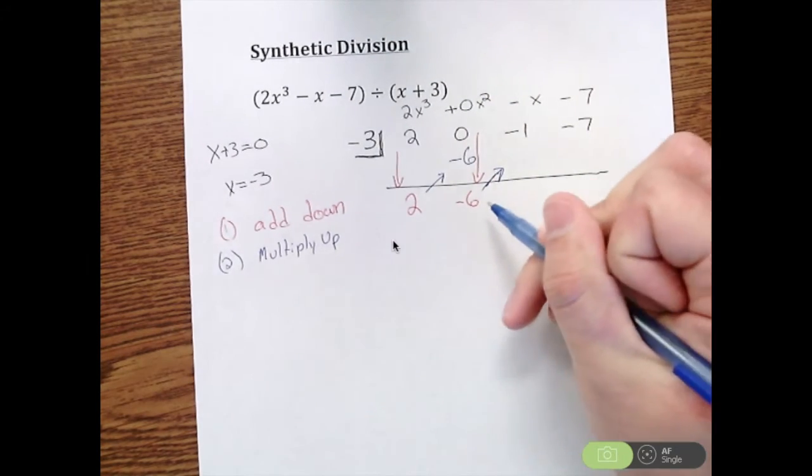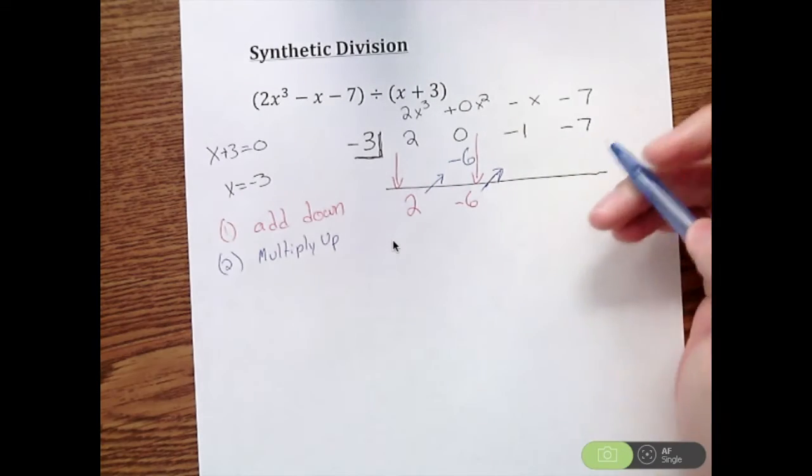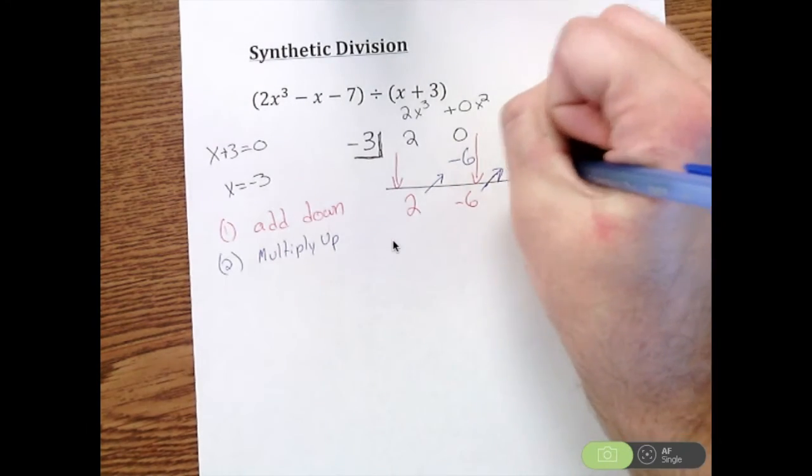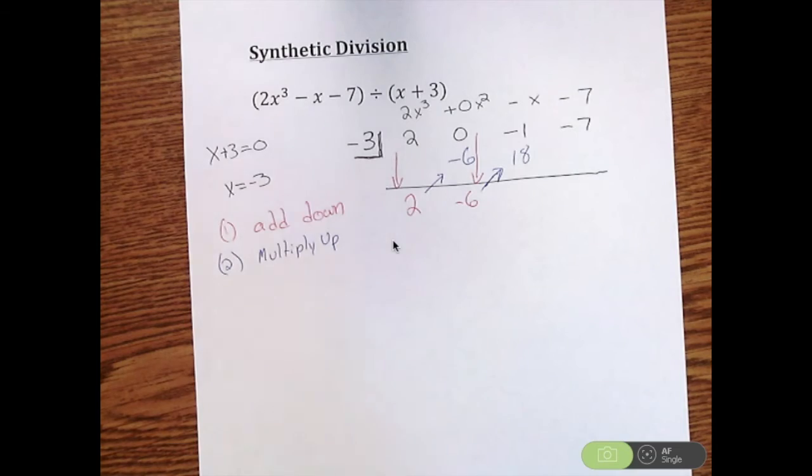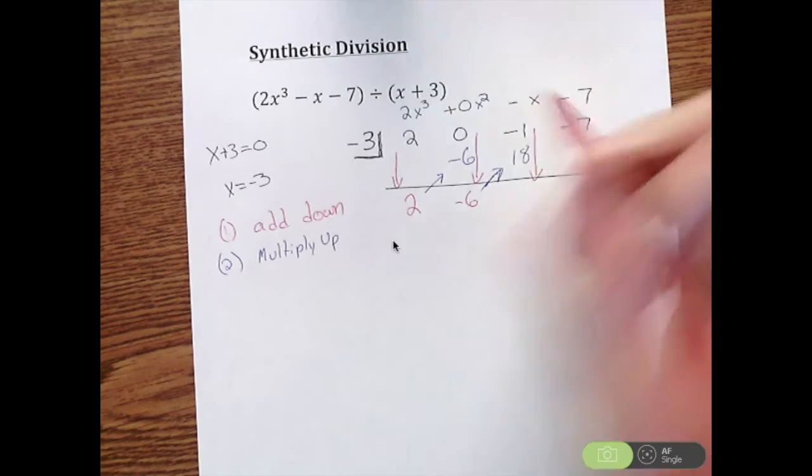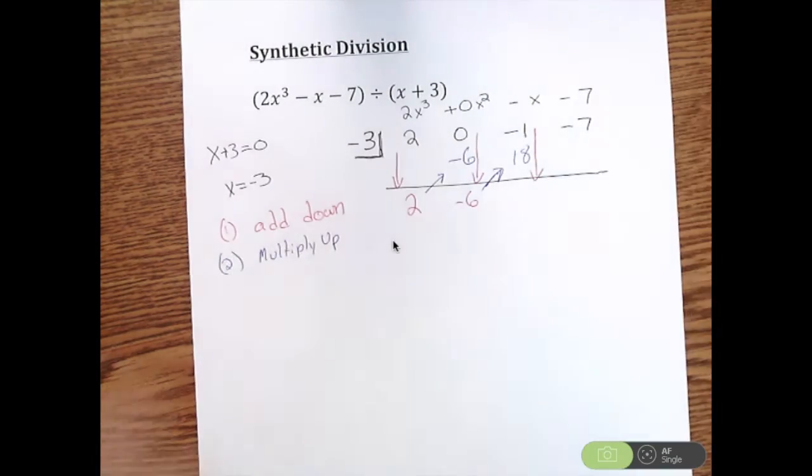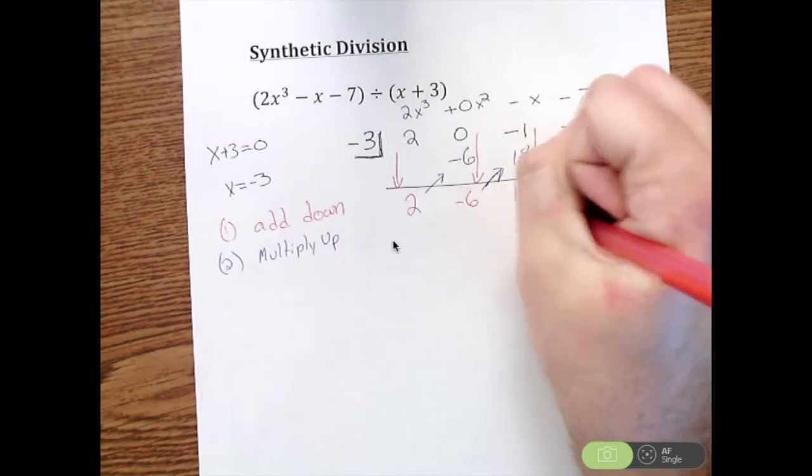Keep going. We're going to add straight down. Negative 1 plus 18 is 17.